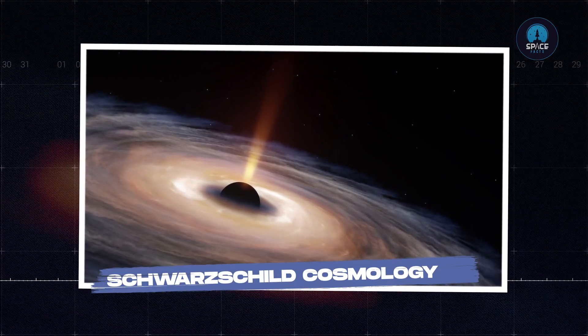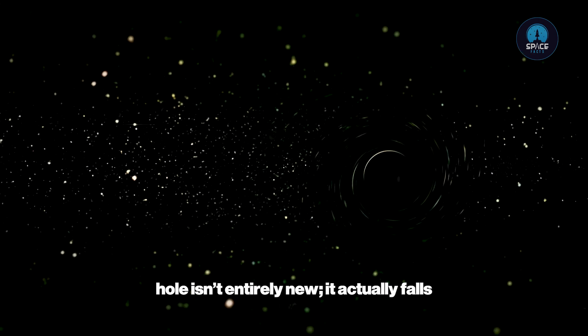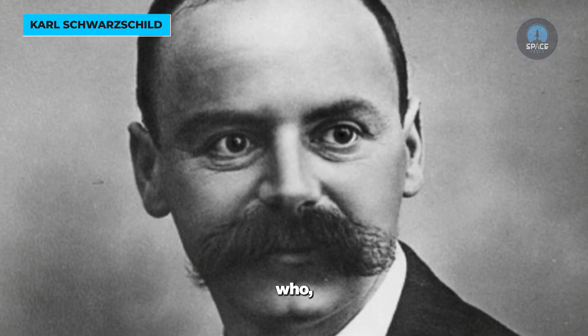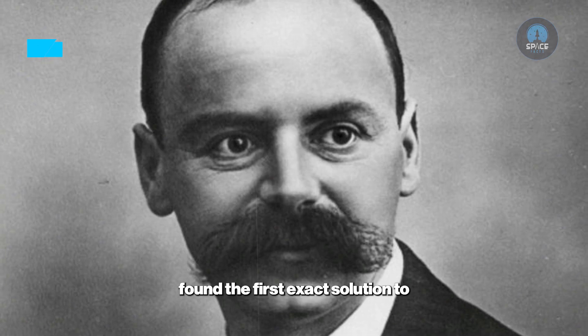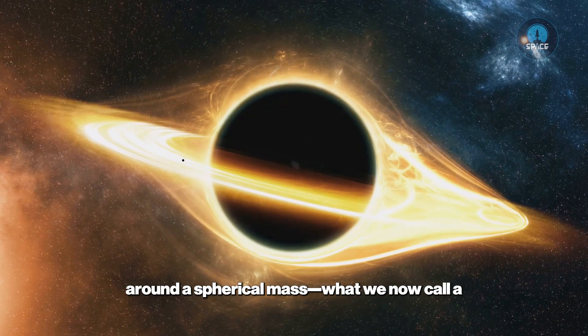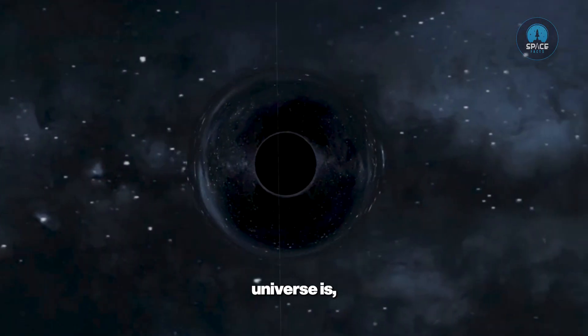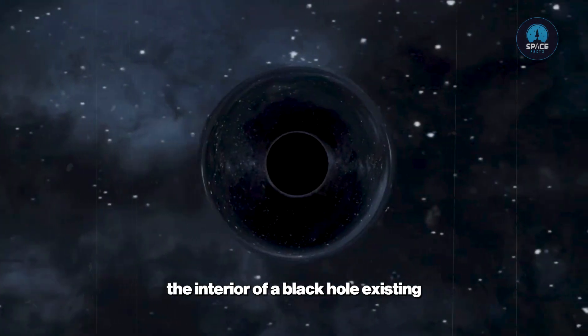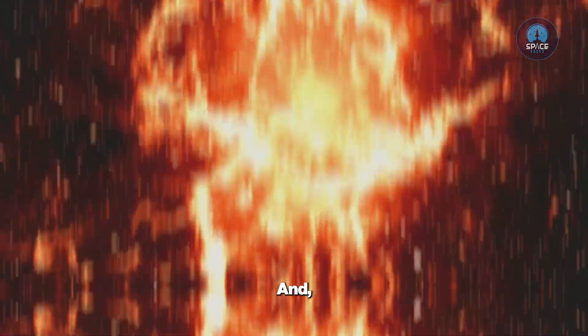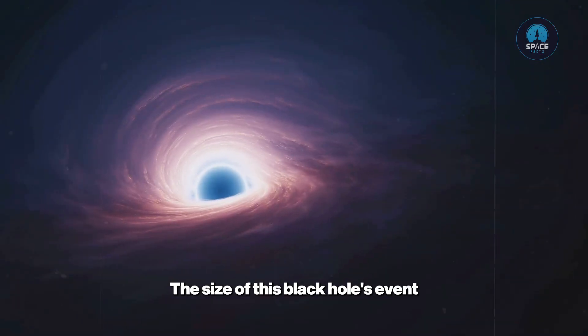Schwarzschild cosmology: So this idea of a universe inside a black hole isn't entirely new. It actually falls under a concept known as Schwarzschild cosmology. The name comes from Karl Schwarzschild, who way back in 1916 found the first exact solution to Einstein's field equations. That solution describes the space-time around a spherical mass, what we now call a black hole. The model suggests that the observable universe is in fact the interior of a black hole existing within a larger parent universe. From our perspective, the Big Bang was the formation of this black hole, and from the outside, our entire cosmos would just look like a regular black hole.